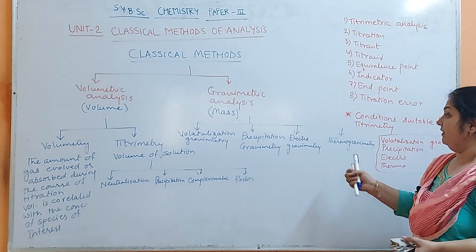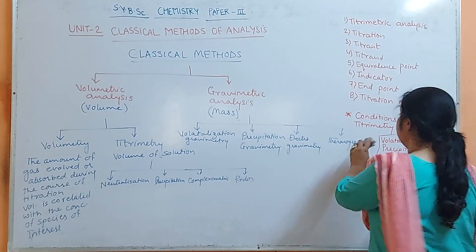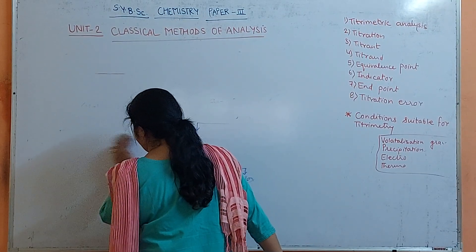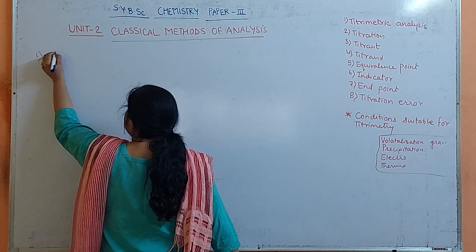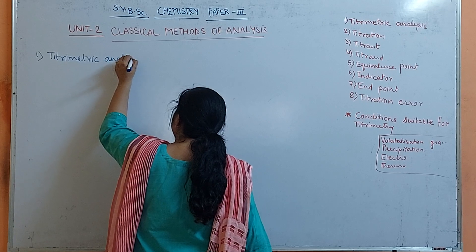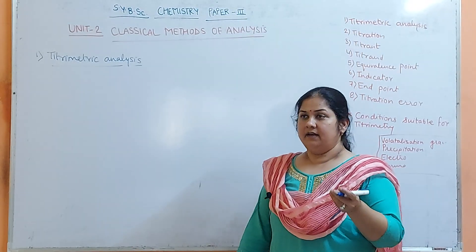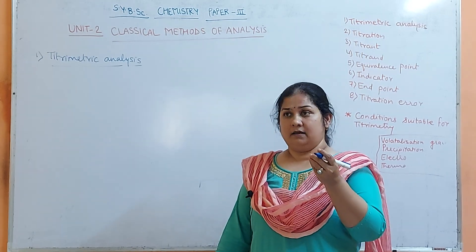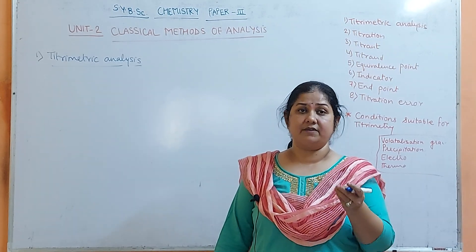We are going to study Volumetric Analysis, but before that we should be familiar with some of the terms used. Different terms are used in Volumetric Analysis, or Titrimetry. The first one is Titrimetric Analysis — it is a technique based on the volume of the solution. It determines how much volume of a solution of known concentration is required to react with a definite volume of another solution, and from that we can find the concentration of the unknown solution.